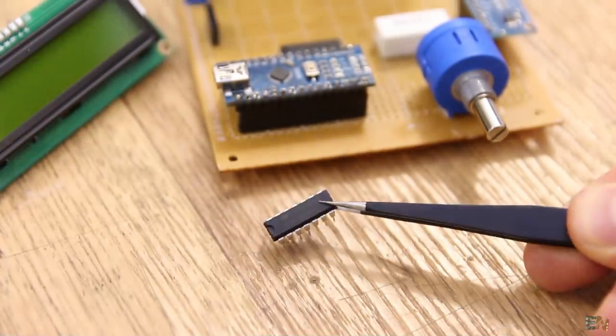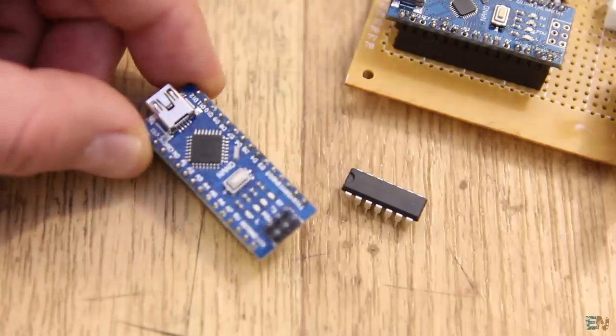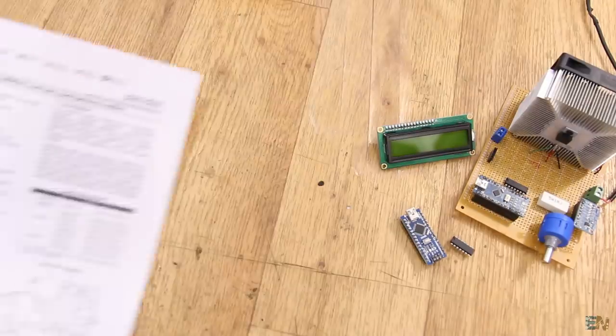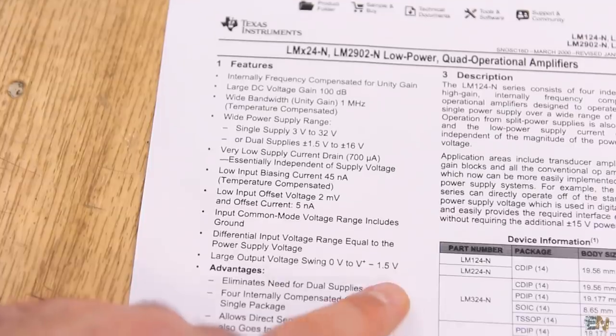As for the op-amp, I will use the common LM324. And something to have in mind, if you supply this op-amp with 5V from the Arduino, have in mind that this IC can't have a rail-to-rail output, so the maximum output will be something around 3.3 or 3.5V.